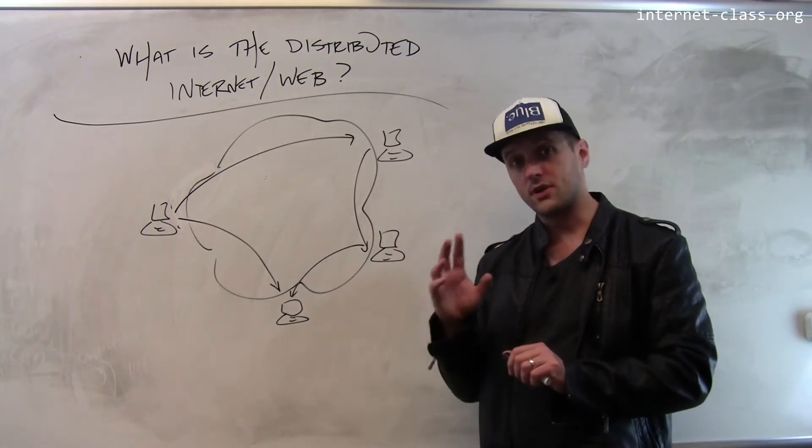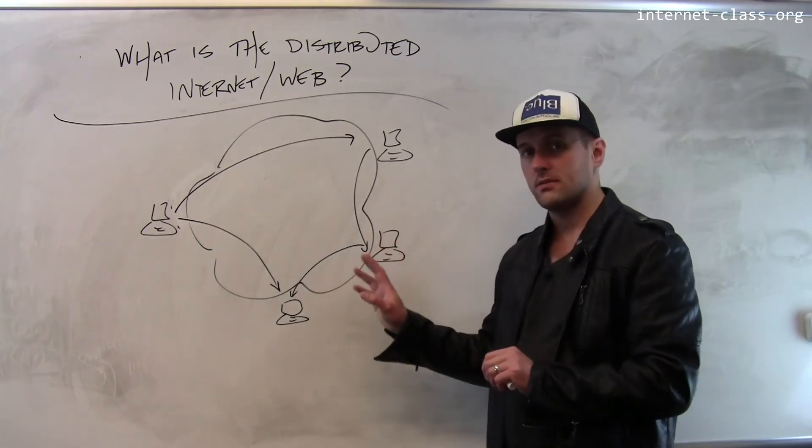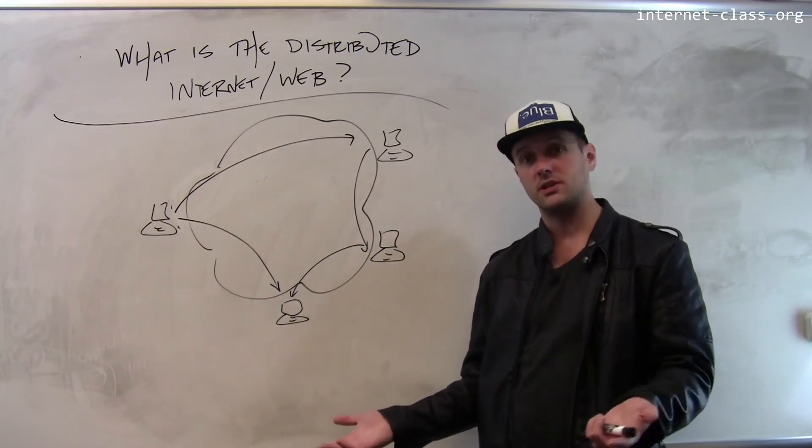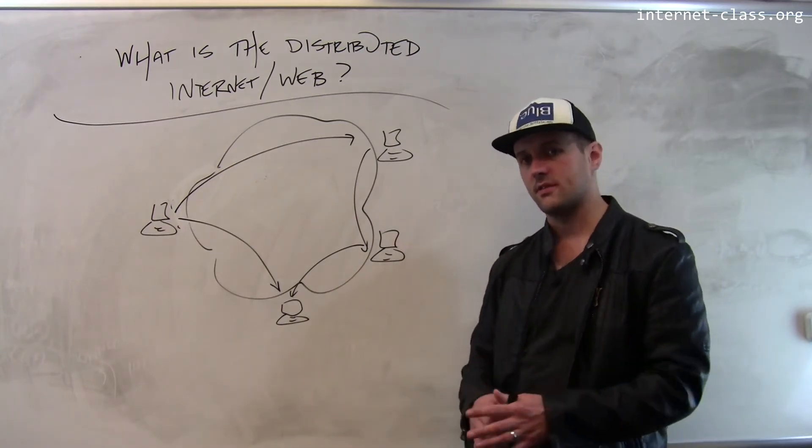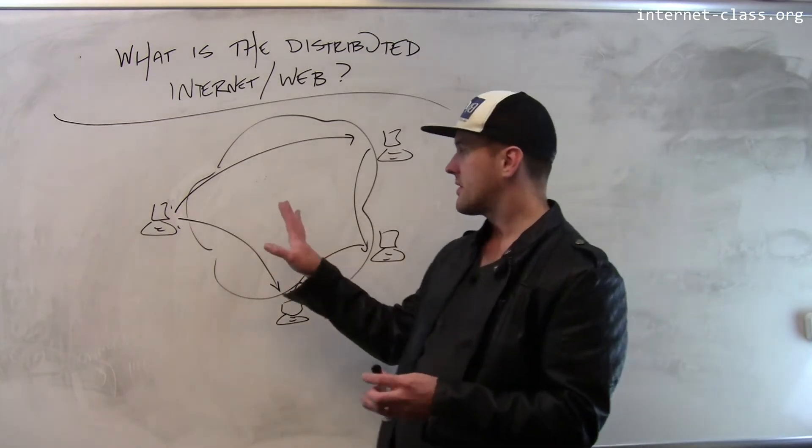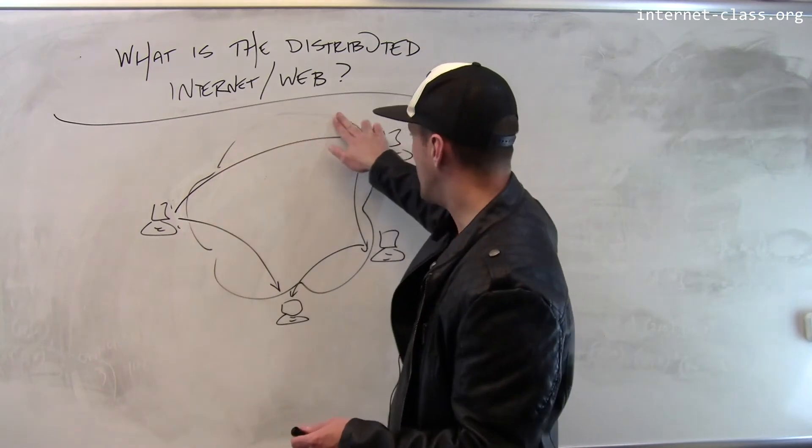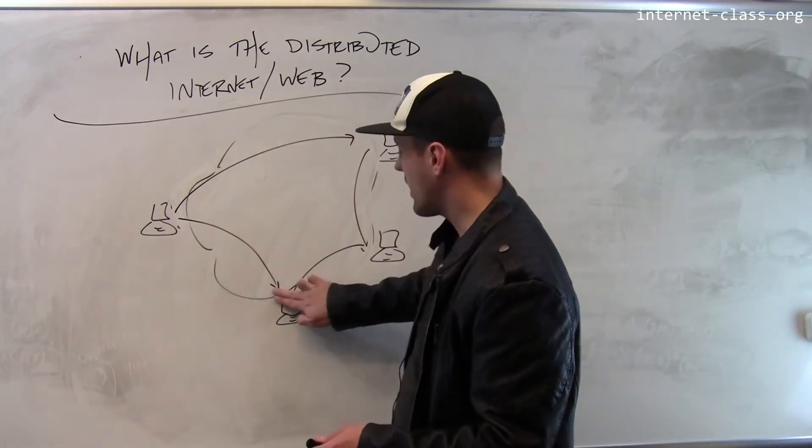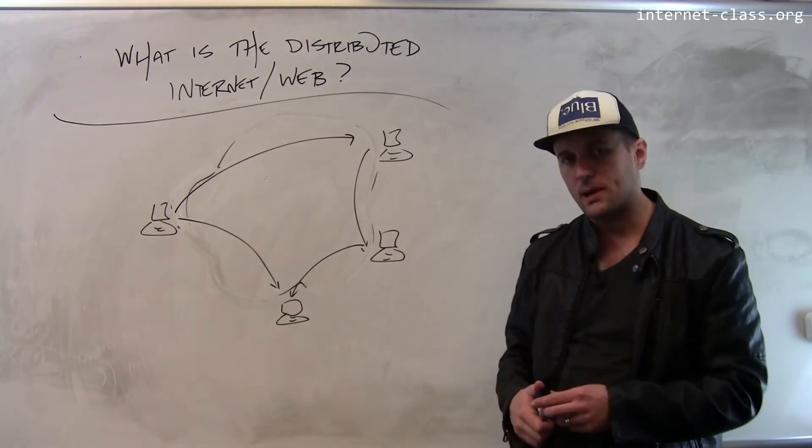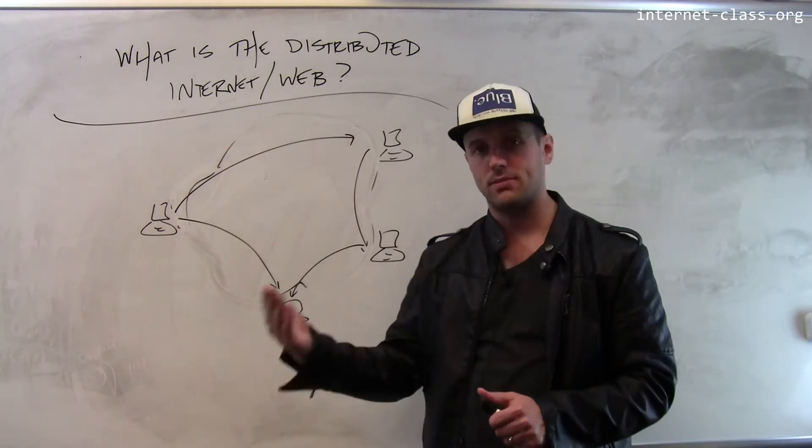So from the perspective of a user, this model might actually seem pretty identical to what you would normally do. You open up a browser, you type something in the search bar, you get a document, you have different types of web services you can interact with, but there's no cloud. There's no requirement that there be some sort of centralized server here. And this opens up a lot of new opportunities, particularly for people to collaborate and publish things together.